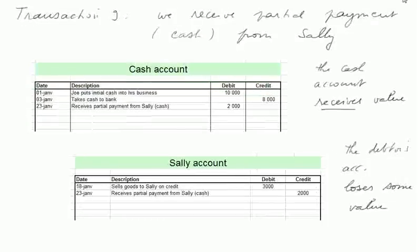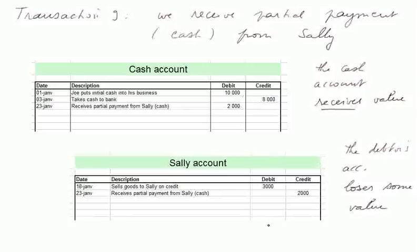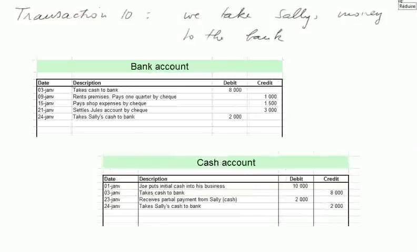Transaction nine. We receive a partial payment in cash from Sally. The cash account receives 2,000 euros and is debited. Sally's account is credited 2,000 euros, so Sally now owes us only 1,000 euros. Transaction ten — we take Sally's money to the bank. So the bank account is debited 2,000 euros and the cash account is credited 2,000 euros. We are back in the cash account to 2,000 euros altogether.